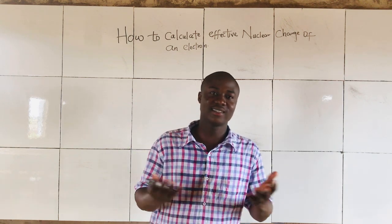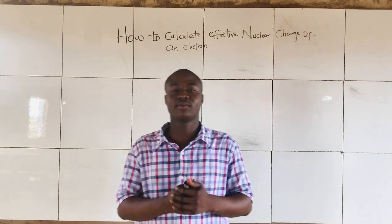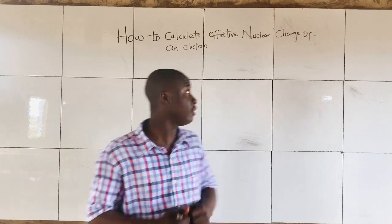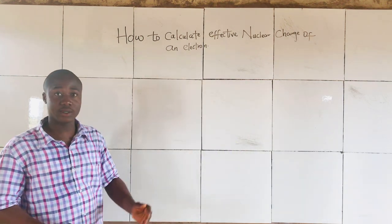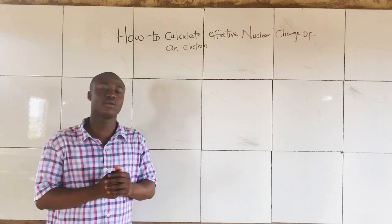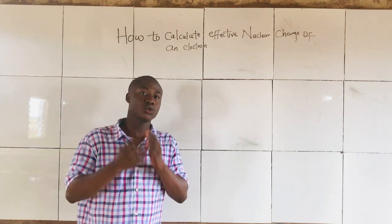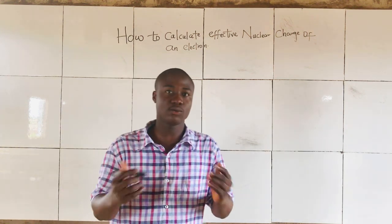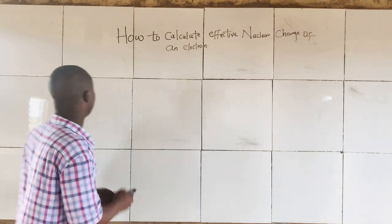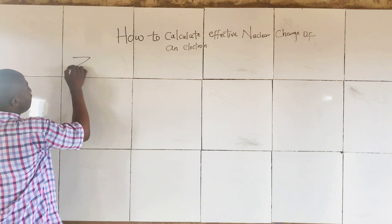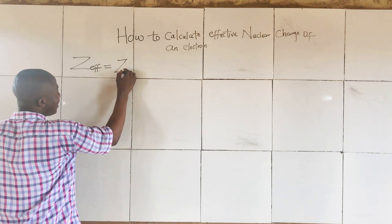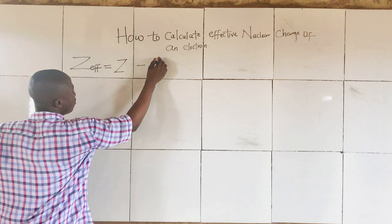Hello my dear students and welcome back to my YouTube channel. In today's video lesson I'll be discussing how to calculate the effective nuclear charge of an electron. Now to do this is very easy — we just need to know a formula. Effective nuclear charge is given as Z minus S.